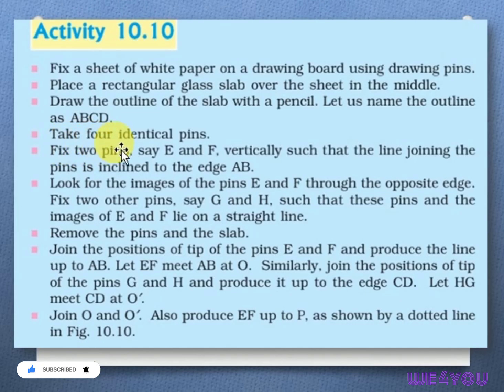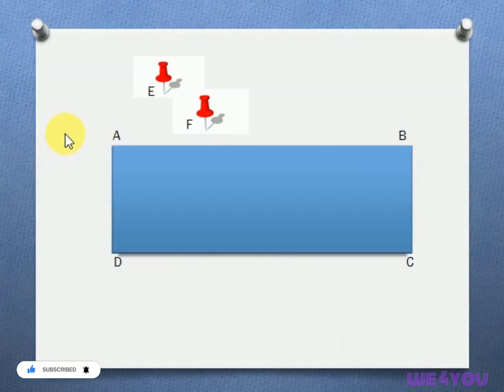Take 4 identical pins. Fix 2 pins, say E and F, vertically such that the line joining the pins is inclined to edge AB. This is the edge AB. We have to take the line vertically to join the edges.